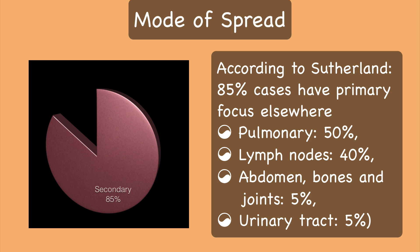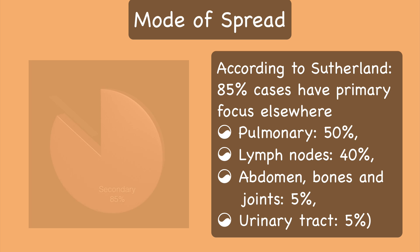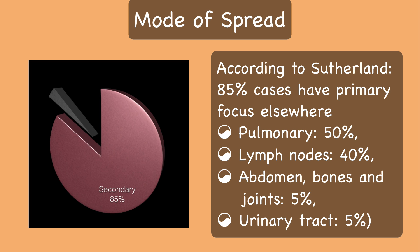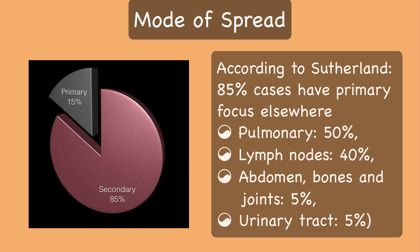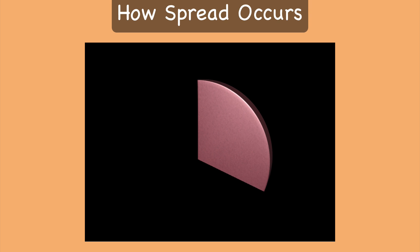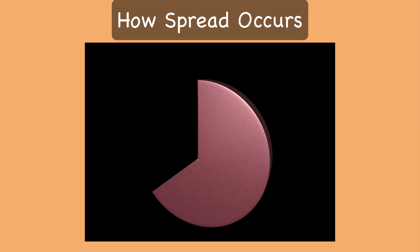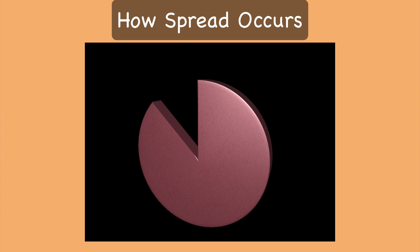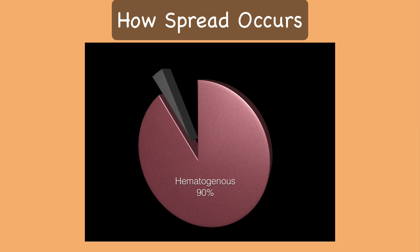The nearer to menarche that primary infection occurs, the more likely it is that pelvic tuberculosis will follow. In 15% of cases there is primary genital infection. The commonest mode of spread of genital tuberculosis is by hematogenous route, which occurs in 90% of cases. In a small number of cases, direct or lymphatic spread occurs from the peritoneum, bowel, mesenteric lymph nodes, or urinary tract. This is referred to as descending infection.